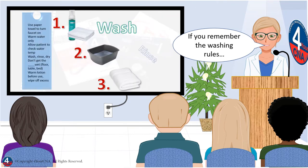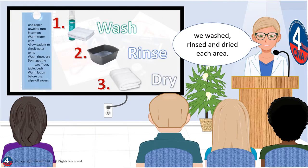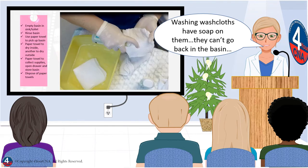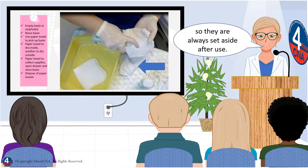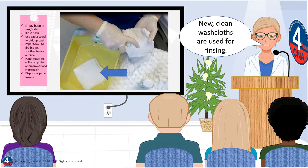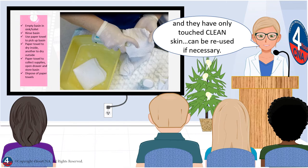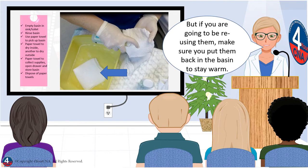If you remember the washing rules, we washed, rinsed, and dried each area. So there are separate washcloths for washing and rinsing. Washing washcloths have soap on them and can't go back into the basin, so they are always set aside after use. New clean washcloths are used for rinsing. Rinsing washcloths, because they have not had soap applied and they have only touched clean skin, can be reused if necessary. But if you're going to be reusing them, make sure you put them back in the basin to stay warm.